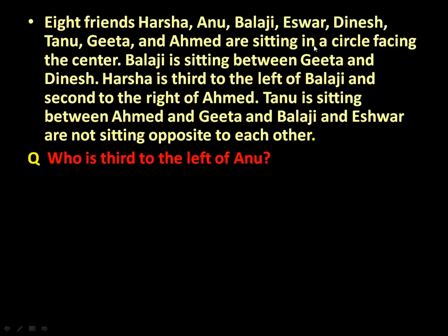Geeta and Ahmad, who are sitting in a circle facing the center. Balaji is sitting between Geeta and Dinesh. Harsha is third to the left of Balaji and second to the right of Ahmad. Tanu is sitting between Ahmad and Geeta, and Balaji and Ishwar are not sitting opposite to each other. The question is: who is third to the left of Annu?